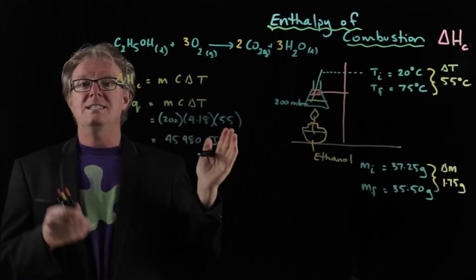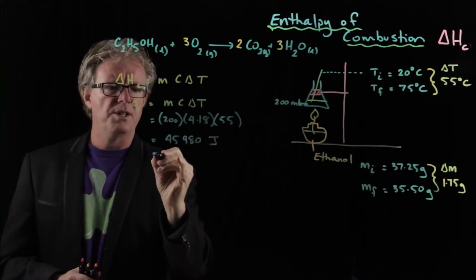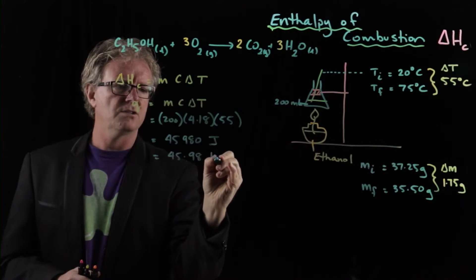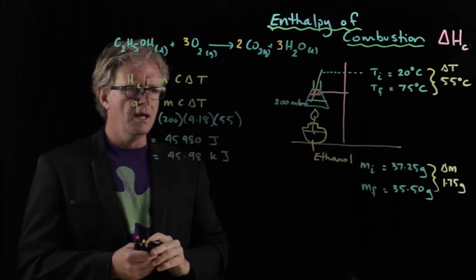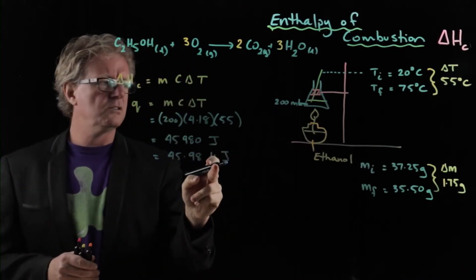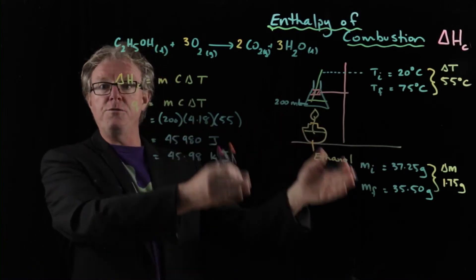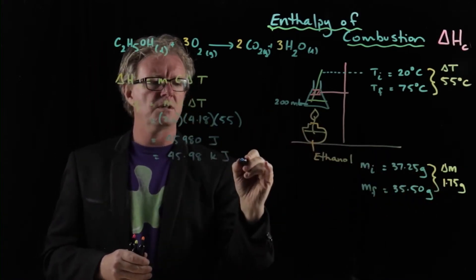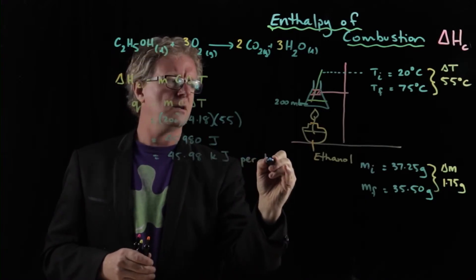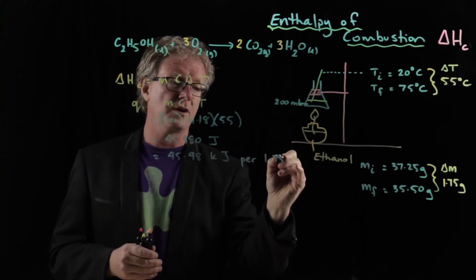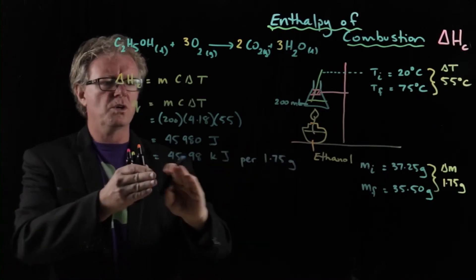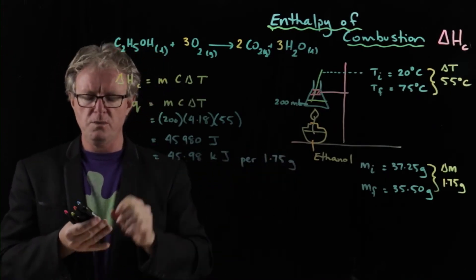Now enthalpy of combustion is in kilojoules, so we're going to divide that by 1,000. So we get 45.98 kilojoules. Now what you're going to remember is that's kilojoules per the amount of fuel that you burnt. So we burnt 1.75 grams, and we want it per mole. So what we're going to do is work this value out per mole. Now there's two ways we can do this.